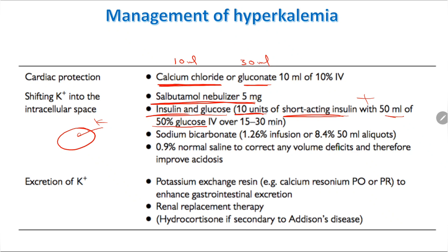Give 10 units of short-acting insulin plus 50 ml of 50% hypertonic glucose over 10 to 30 minutes. Sodium bicarbonate is also given if the patient has acidosis — specifically when pH is reduced, especially in patients with renal failure. Give 50 ml of 8.4% sodium bicarbonate. Normal saline and furosemide may also be given.